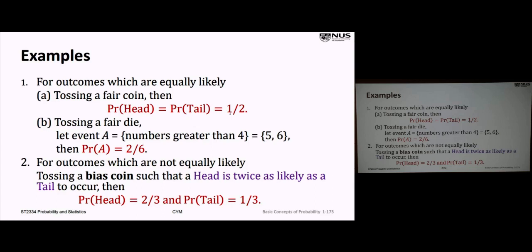If we introduce the event A that we roll a number greater than four, that set contains the elements five and six. Using the principle that the probability is the number of components in the set divided by the total number in the sample space, the chance of this event is two over six.